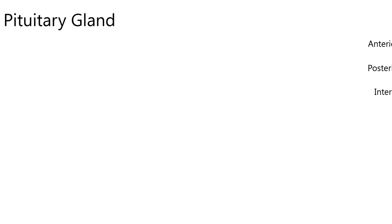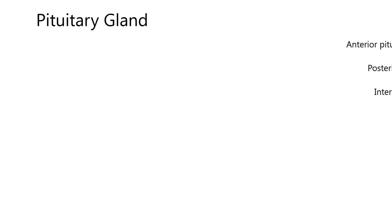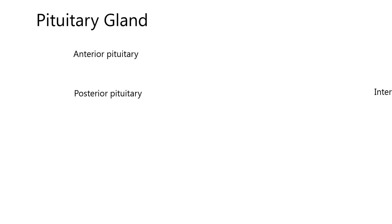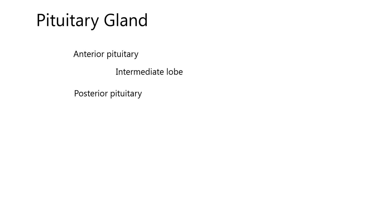We're going to be talking about the pituitary gland. It has two major regions and then a minor third region. We're going to talk about the anterior pituitary gland — sometimes called the anterior lobe — and then also the posterior pituitary, also called the posterior lobe. Some animals have an intermediate lobe that does certain things, but not in our main animals: dog, cat, and horse.